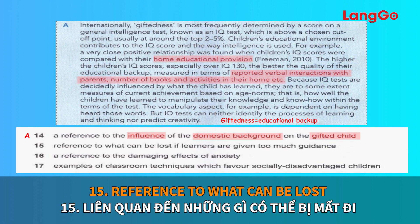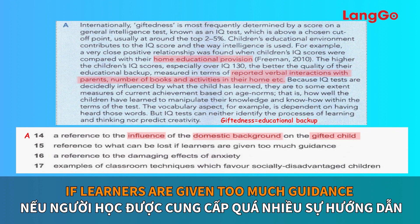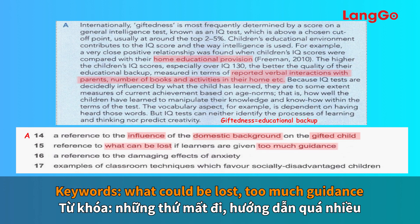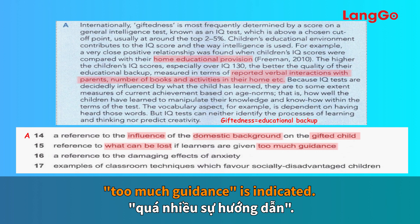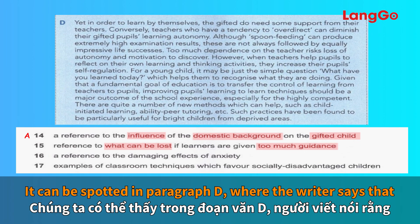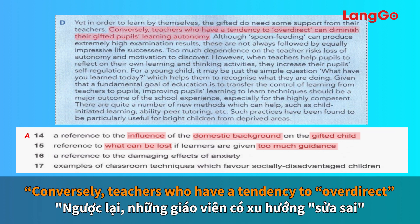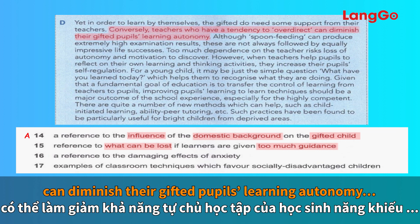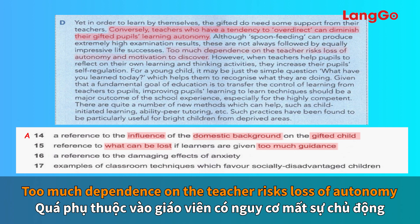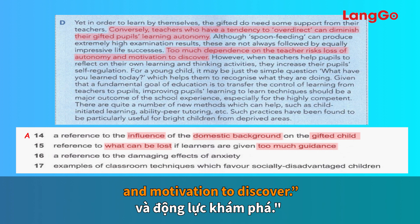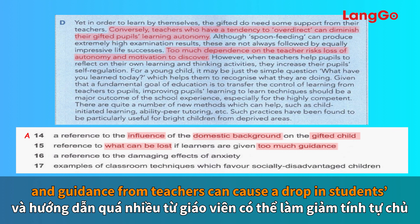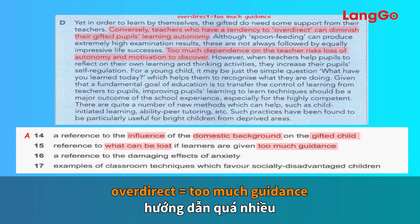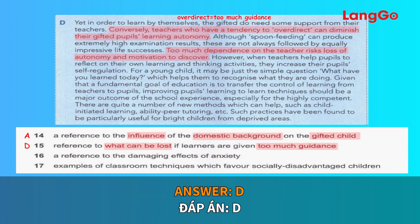Question number 15: a reference to what can be lost if learners are given too much guidance. Our keywords here are what could be lost and too much guidance. We have to find the position where information referring to too much guidance is indicated. It can be spotted in paragraph D where the writer says that, conversely, teachers who have a tendency to over-direct can diminish their gifted pupils' learning autonomy. Too much dependence on the teacher risks loss of autonomy and the motivation to discover. Over-direct is synonymous with too much guidance. Our answer is D.